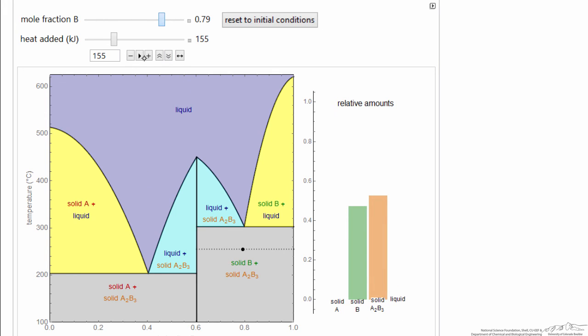I'm going to use the play button here, where we're going to continuously add heat, and you can watch what happens as we get to eutectic point. Notice both solid phases disappearing, the liquid forming, the temperature's not changing, until all the solid disappears, and now as we continue that heat, the temperature increases.